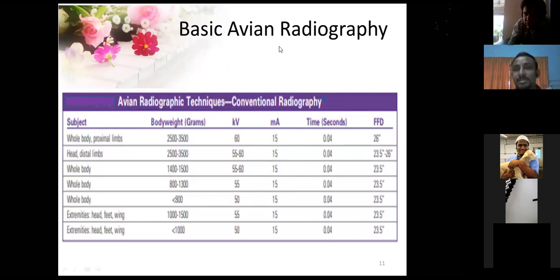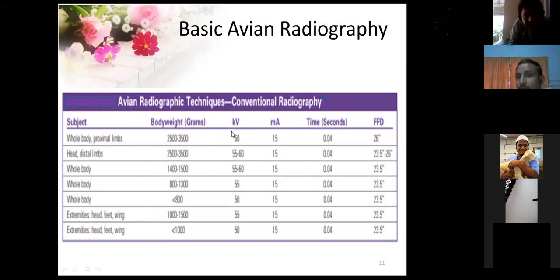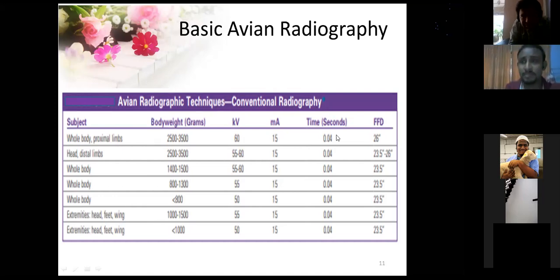Regarding X-ray technical parameters, a table has been provided showing which parts to view, the body weight of the bird, the KV to be kept, the mA to be kept, and the focal film distance. Generally, 50 to 60 KV is very good for birds, 50 mA, and the exposure time should be very short because birds keep moving and their respiration is very fast. You can take a screenshot of this table and paste it in your X-ray room.